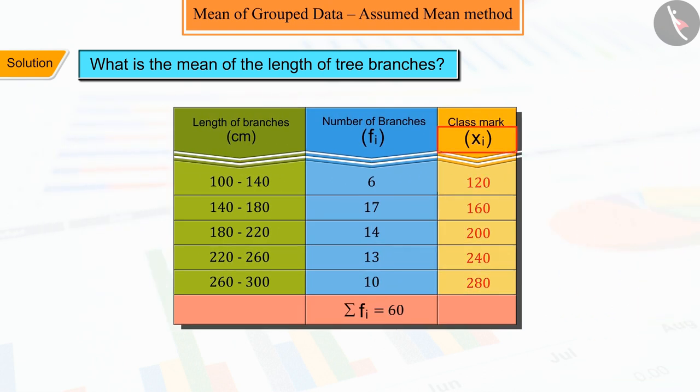So, from the xi obtained, any value out of xi can be chosen as the assumed mean, which we represent by a.